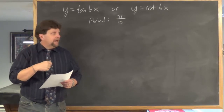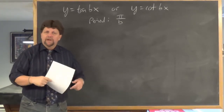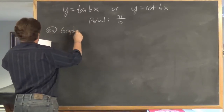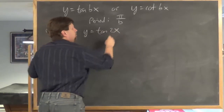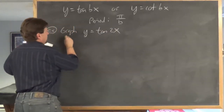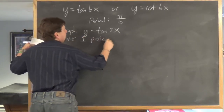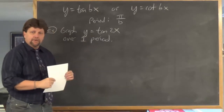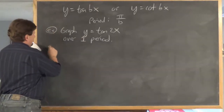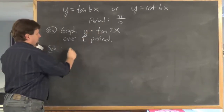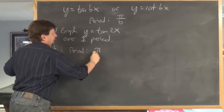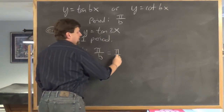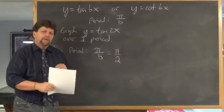I'm going to do a quick example here of graphing a tangent function over one period. Let's say you're asked to graph y equals tangent 2x over one period. The first thing I'd do is determine the period of this graph. As I've written here, the period is simply pi divided by b. Since b has a value of 2, the period is pi over 2.